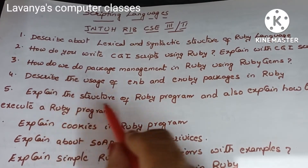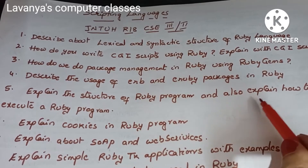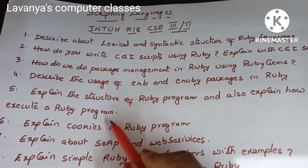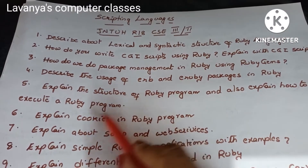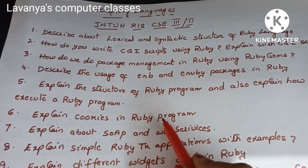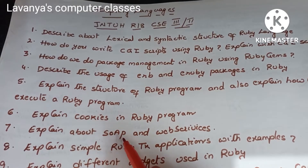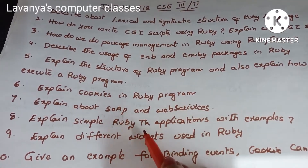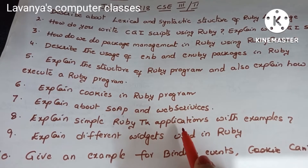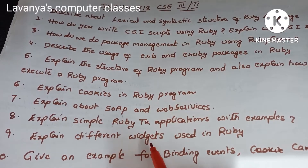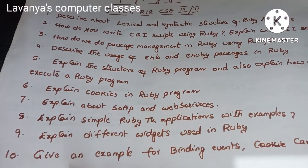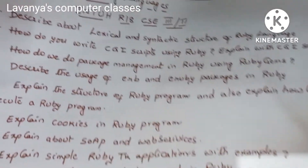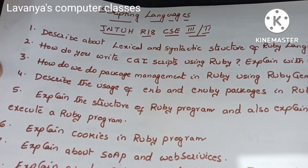Next: explain the structure of a Ruby program and how to execute a Ruby program — that is, the structure and execution of a Ruby program. Also explain cookies in Ruby and explain about SOAP and web services. Explain simple Ruby TK applications with examples. Next, explain different widgets used in Ruby and give an example for binding events and the canvas. These are the important questions in unit 1.